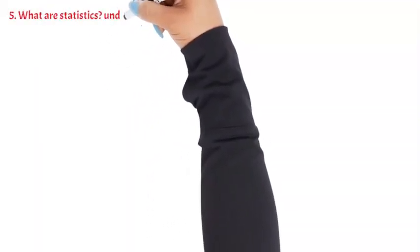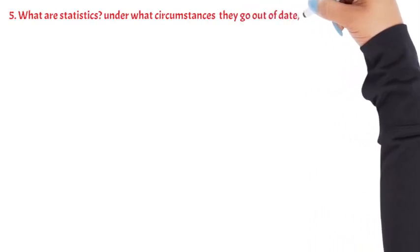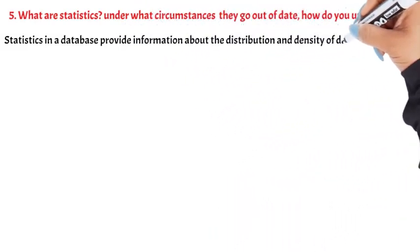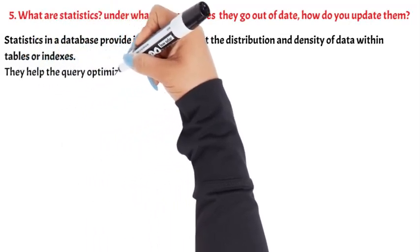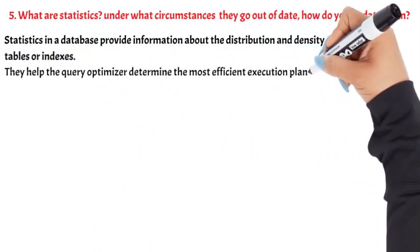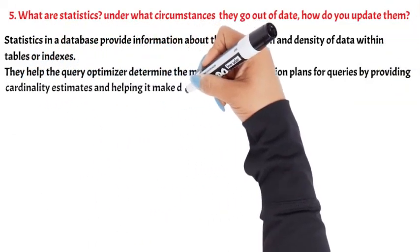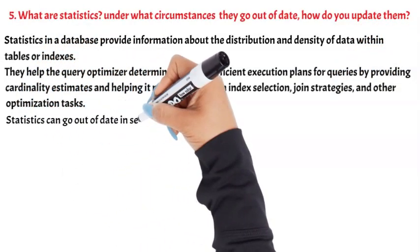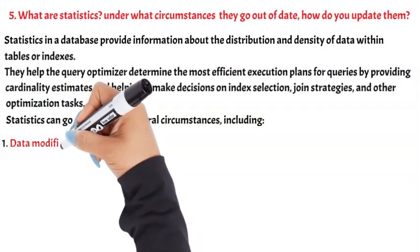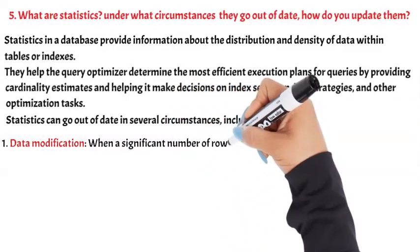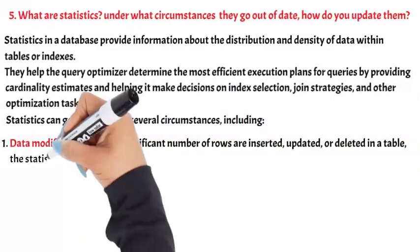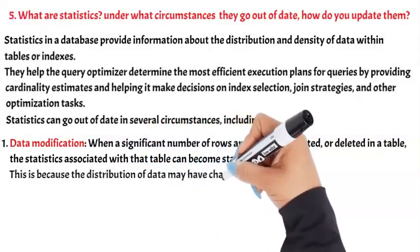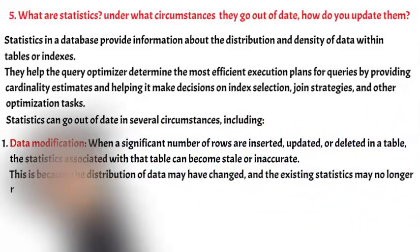Question 5: What are statistics? Under what circumstances do they go out of date, and how do you update them? Statistics in a database provide information about the distribution and density of data within tables or indexes. They help the query optimizer determine the most efficient execution plans for queries by providing cardinality estimates and helping it make decisions on index selection, join strategies, and other optimization tasks. Statistics can go out of date in several circumstances. 1. Data Modification: When a significant number of rows are inserted, updated, or deleted in a table, the statistics associated with that table can become stale or inaccurate, because the distribution of data may have changed and the existing statistics may no longer reflect the current data characteristics.